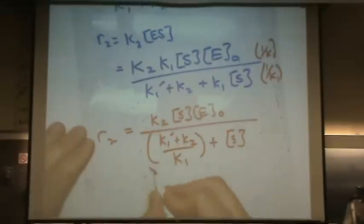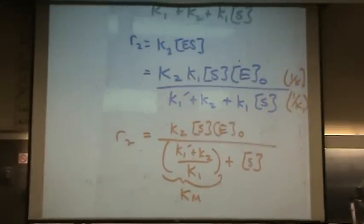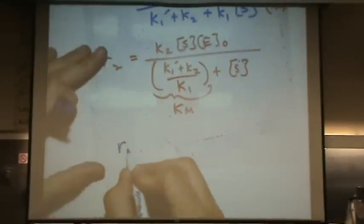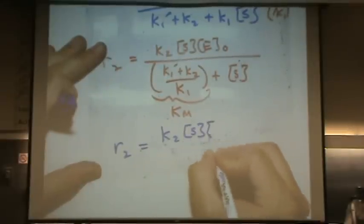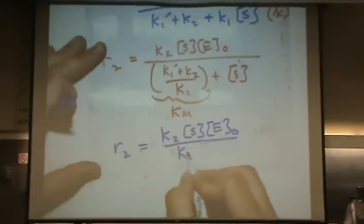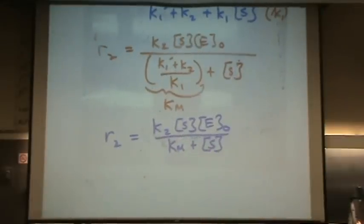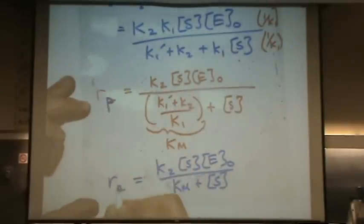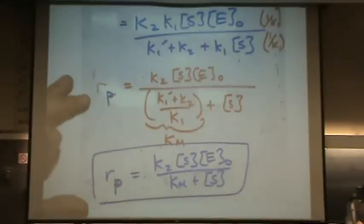And then they like to call this quantity KM — capital KM. So with those substitutions, let's just write the final answer. R₂ is K2·S·E₀, and we call it R_P — rate of production of products — which equals that expression.